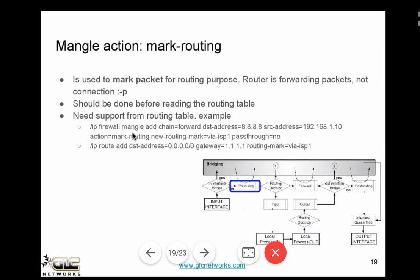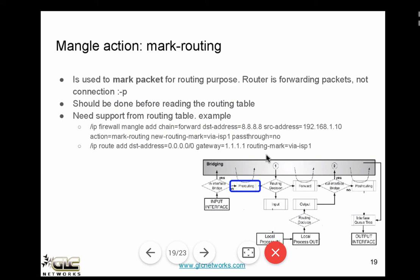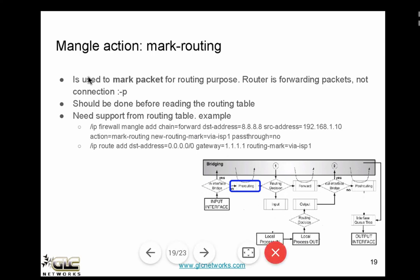Next is mark routing. We already know mark packets and mark connection. Mark routing is used to mark packets — not connections — for routing purposes. Because the packet flow diagram explains how the packet is processed on MikroTik, the router forwards packets, not connections. Therefore, mark routing should be done before the packet reaches the routing table, so it has to be done at the pre-routing chain.